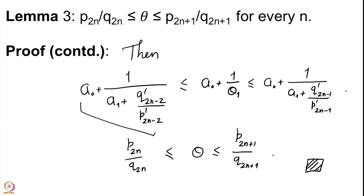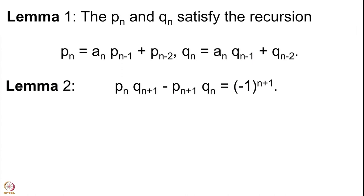So we have proved our lemma and also proved the main result assuming the lemmas. We still need to prove the two remaining lemmas — the recursion for Pn and Qn, and the cross-difference formula. We will prove those next and then go on to see how the continued fraction expansion convergents give a good rational approximation to our theta. Thank you very much.